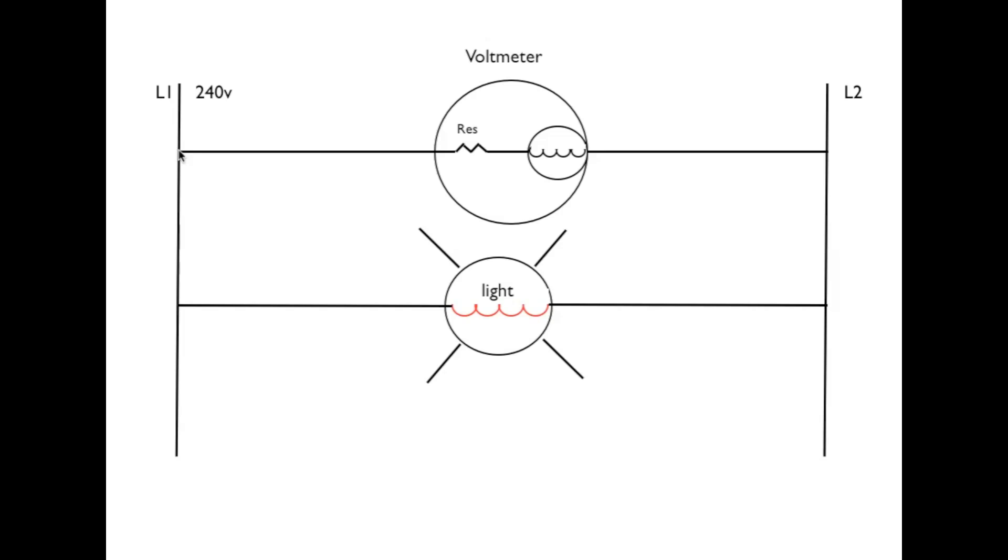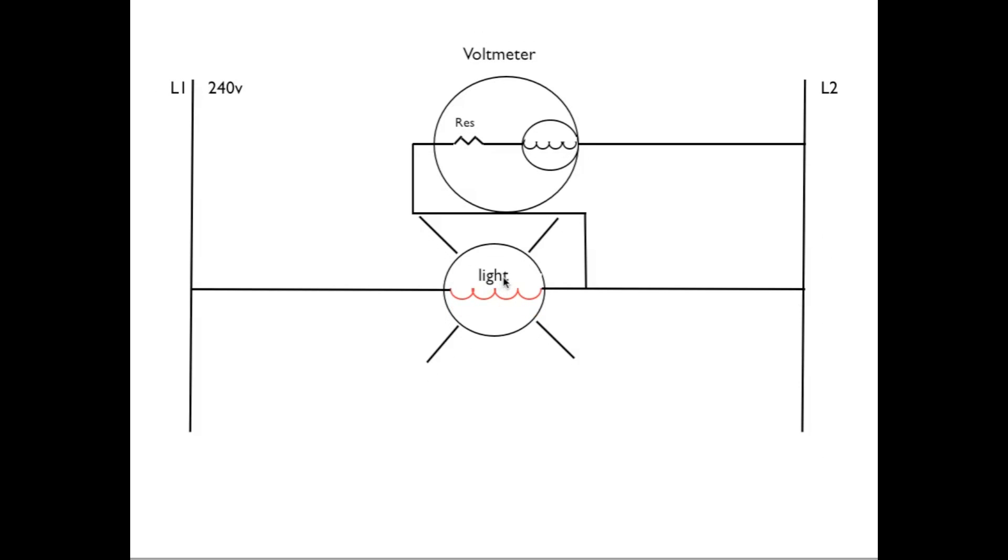When I say voltage drop, I mean the voltage available to the circuit. There's 240 volts available to the circuit. This is going to read what that is.